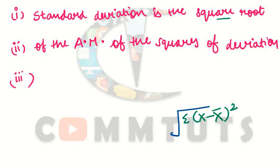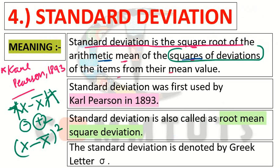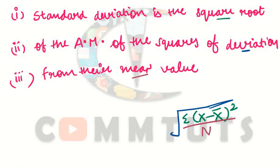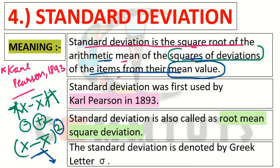Standard deviation is the square root of the arithmetic mean of the squares of deviations from the mean. So: first take the square root; second, find the arithmetic mean of the squared deviations; third, divide by n, the total number of observations. This gives us the formula: sigma equals square root of summation (x minus x-bar) squared divided by n.